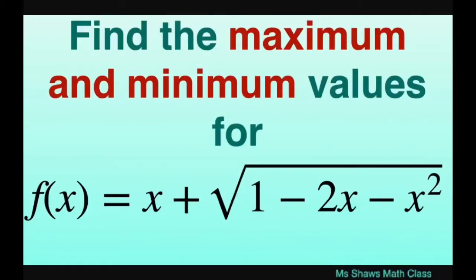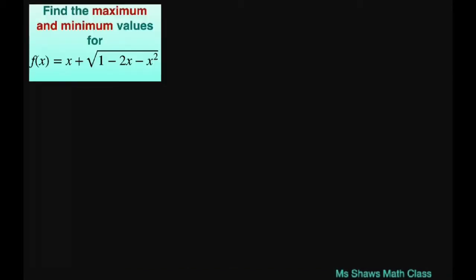Hi everyone! We're going to find the maximum and minimum values for f of x equals x plus square root of 1 minus 2x minus x squared. So before we get started, let's go ahead and look at the domain and solve for x.